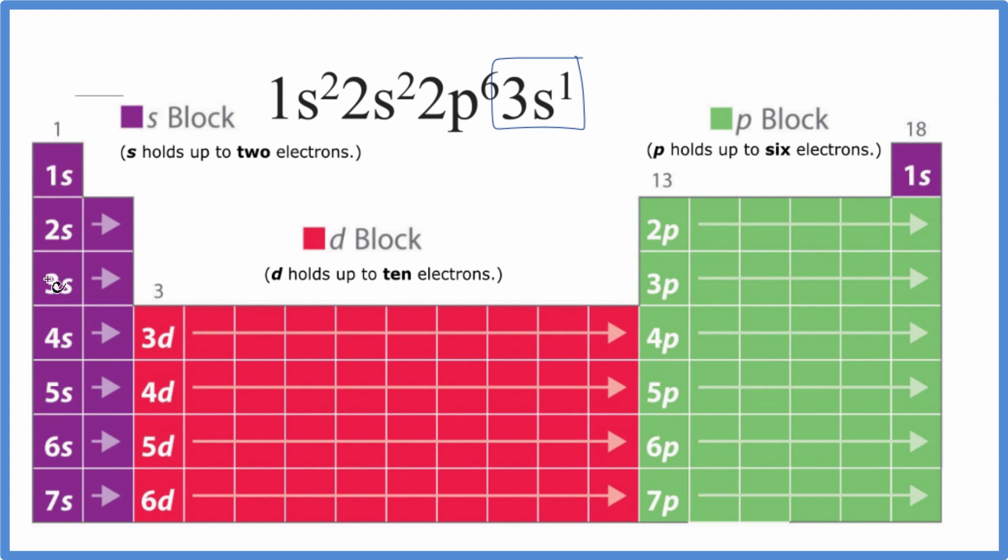We go down, we go 1, 2, 3. Here's 3S, and this will be 3S1. So this right here, this element corresponds to this electron configuration.